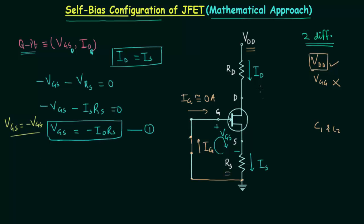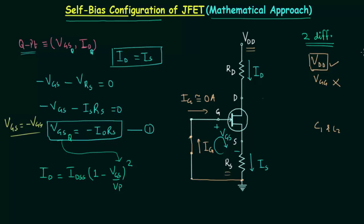Now let's find the drain current ID. We use the Shockley equation: ID = IDSS × (1 − VGS/VP)², where VP is the pinch-off voltage. Since VGS = −ID·RS (the Q-point value), we substitute it into the Shockley equation and simplify.